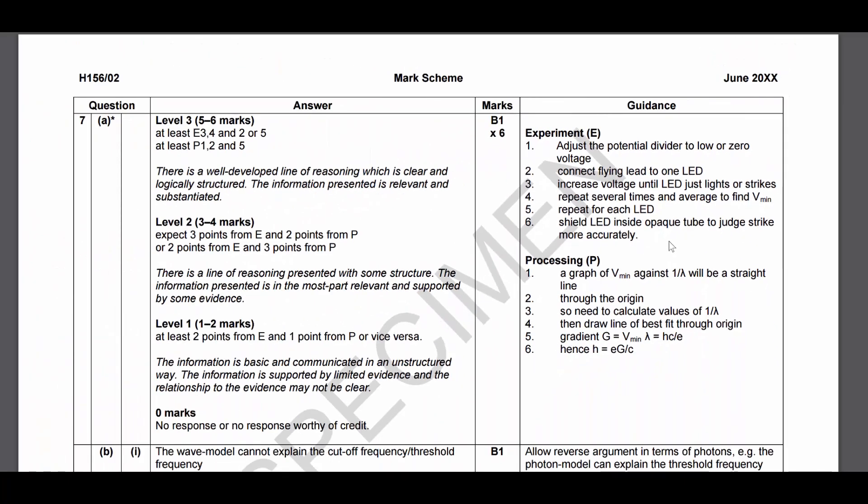You then need to repeat this several times and find an average Vmin for each of the LEDs. Now you don't need to have got all of those points to get a maximum level 3 answer for this part of the experiment, but you do need most of them.